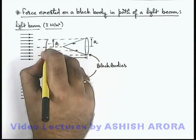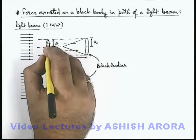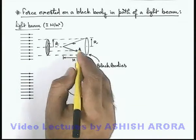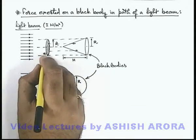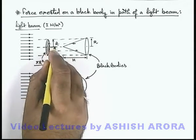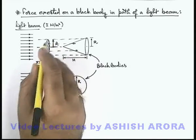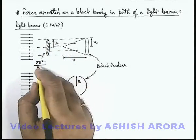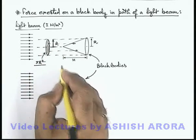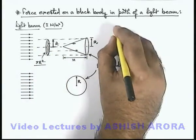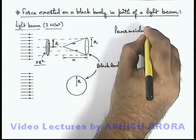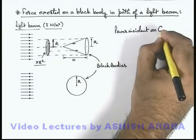So we can see here the projection area or cross section of the beam which is falling on the black body cone is of area πr² because the radius of this projected cross section of this beam is r. So in this situation, if we calculate the power incident on the cone...